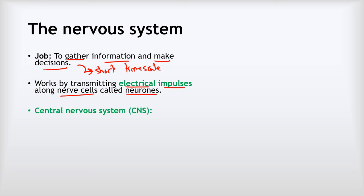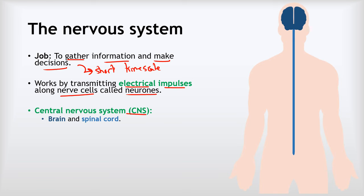Part one of the nervous system is called the central nervous system, the CNS, and there are two parts of that: the brain and the spinal cord. The brain is up there in our skulls, and the spinal cord is this great big thick bundle of nerves that runs through the hollow channel down our spine. Together, the brain and the spinal cord make up the central nervous system. You are your central nervous system — all of your thoughts, memories and emotions take place in your brain, which is the major part of your central nervous system.